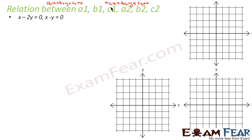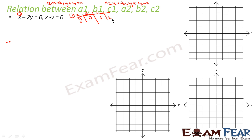I have taken equations x minus 2y equals 0 and x minus y equals 0, and I will try to plot them. For equation one, I'm finding x, y values. If x equals 0, y comes out to be 0. If y equals 1, x comes out to be 2. If y equals 2, x comes out to be 4, because x is nothing but 2y — x will be double of y. So we got three values.